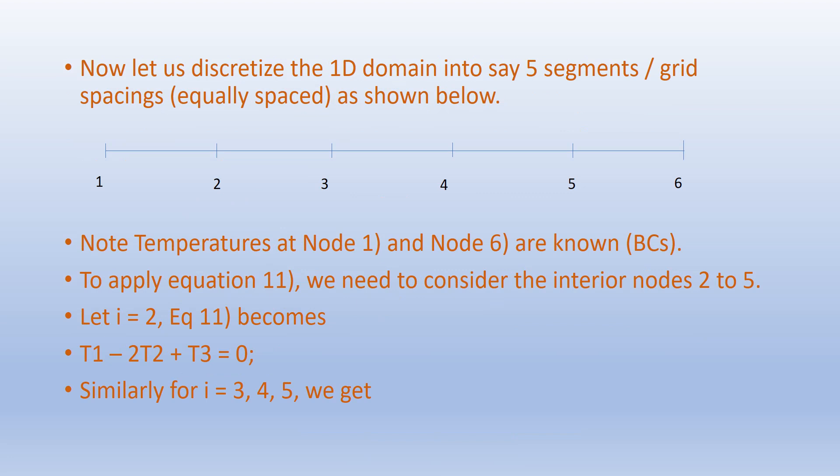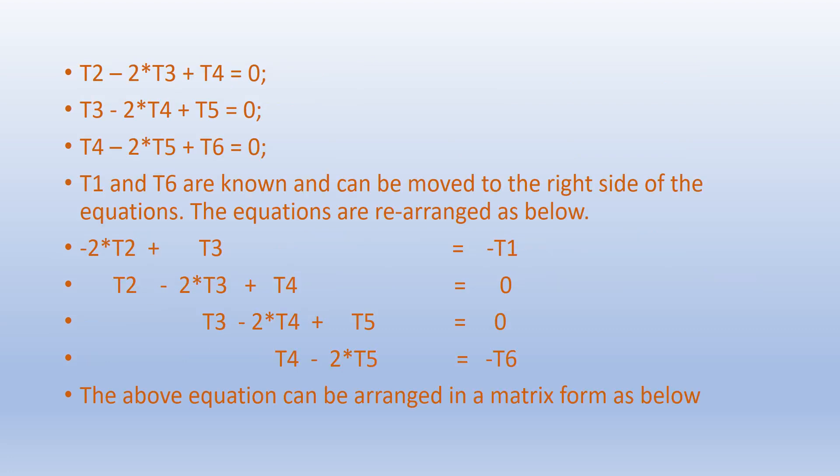Now let us discretize the 1D domain into five segments or grid spacings, equally spaced, as shown below, numbered from 1 to 6. The temperatures at node 1 and node 6 are known as they are the boundary conditions. To apply the finite difference equation we consider the interior nodes 2 to 5. For i = 2, the equation becomes T₁ − 2T₂ + T₃ = 0. Similarly for i = 3, 4, 5 we get T₂ − 2T₃ + T₄ = 0, and so on. Since T₁ and T₆ are known, we can move them to the right-hand side of the equations.